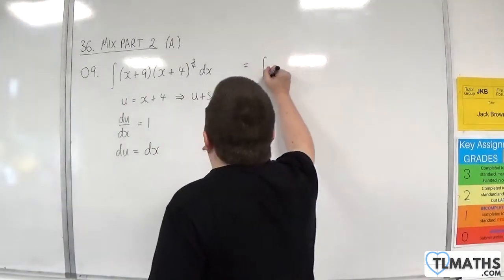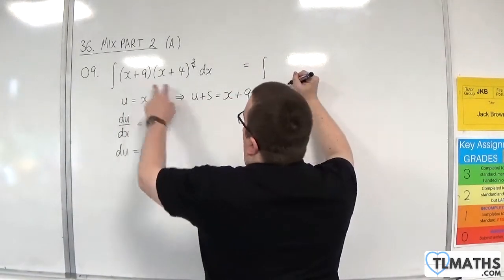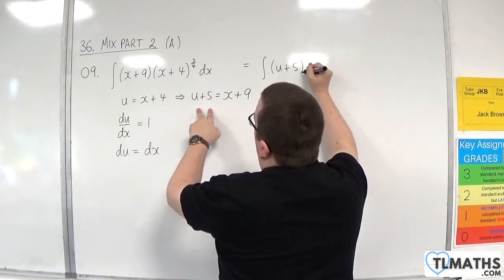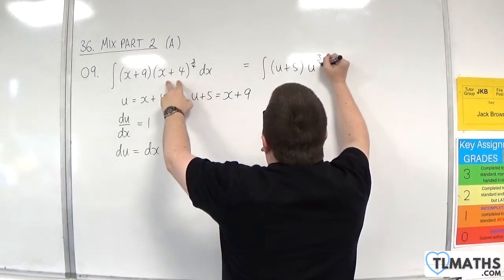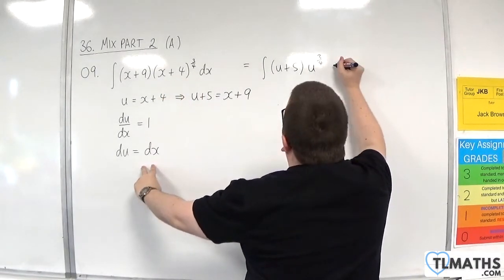So we have the integral of x plus 9, which is u plus 5. The x plus 4 is u, so we've got u to the 3 quarters. The dx is replaced with du.